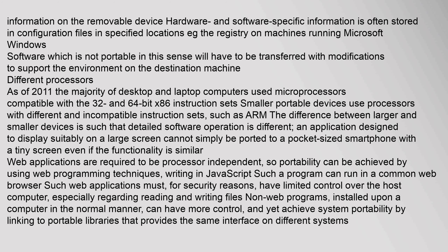Portable storage devices store all configuration information on the removable device. Hardware and software specific information is often stored in configuration files in specified locations, such as the registry on machines running Microsoft Windows. Software which is not portable in this sense will have to be transferred with modifications to support the environment on the destination machine.